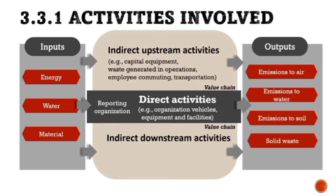Capital equipment, waste generated in operations, employee commuting, and transportation are some examples of the indirect upstream activities which include inputs and outputs generated by other upstream activities. For indirect downstream activities, it included the distribution of products to the client, the use or consumption of the provided goods and end of life treatment of products sold.